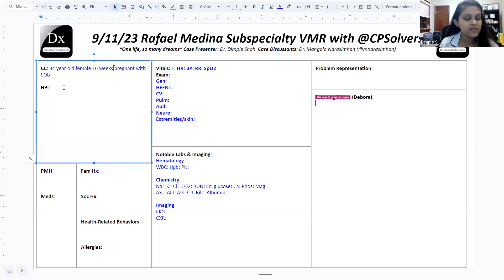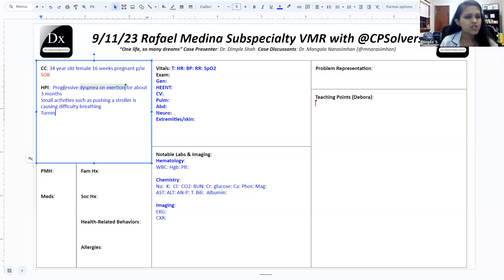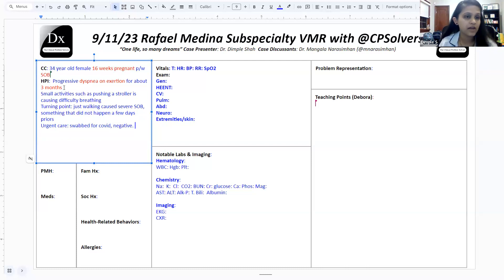All right, so let's get started. So we have a 34-year-old female who is 16 weeks pregnant presenting with shortness of breath. She says that she's been having some progressive dyspnea on exertion for about three months. She noticed that even small activities such as pushing her older child's stroller or walking up the stairs is causing her some difficulty with breathing.